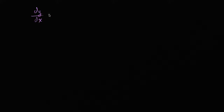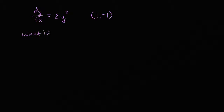Let's get some practice with separable differential equations. We have the differential equation: the derivative of y with respect to x is equal to two y squared. The graph of a particular solution passes through the point (1, -1). What is y when x is equal to three for this particular solution? I encourage you to pause the video and try to work through it on your own.